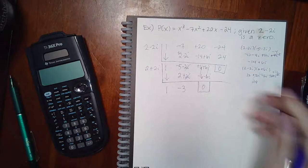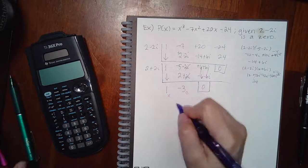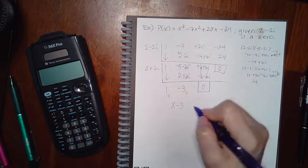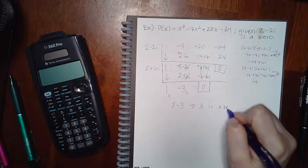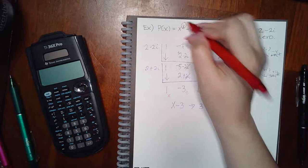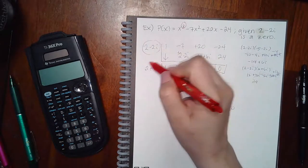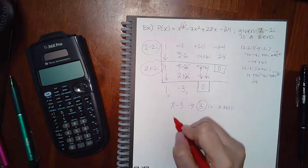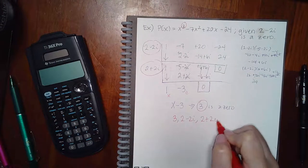The last value is the constant and the next is x, giving x minus 3 as a factor, which means 3 is a zero. Since the polynomial is a cubic, we should have exactly three zeros, and we do: 3, 2 minus 2i, and 2 plus 2i.